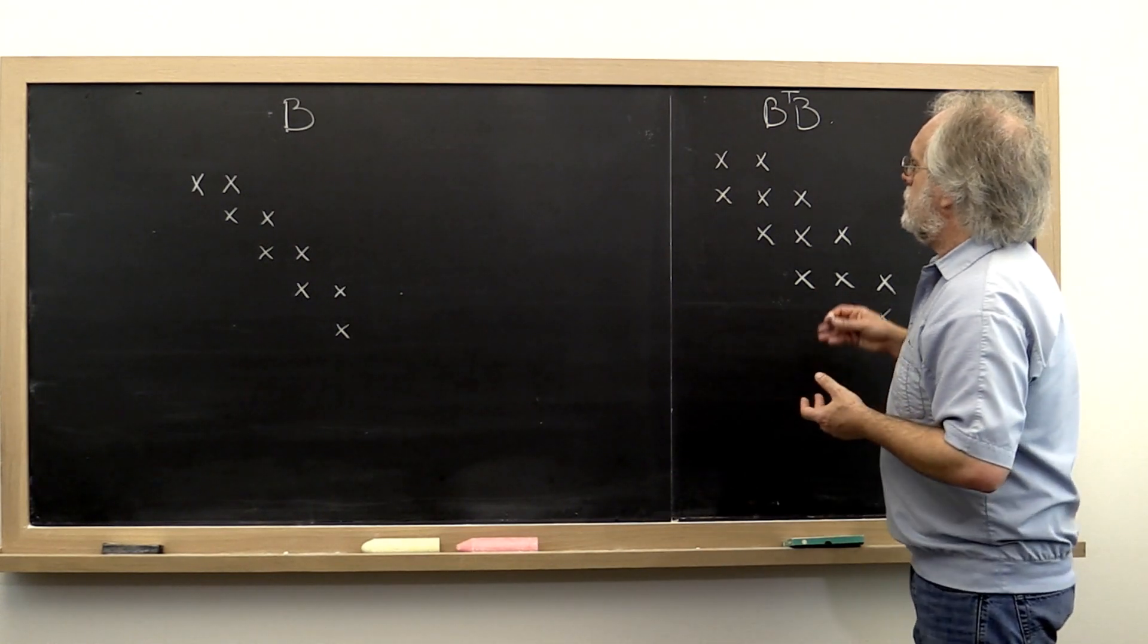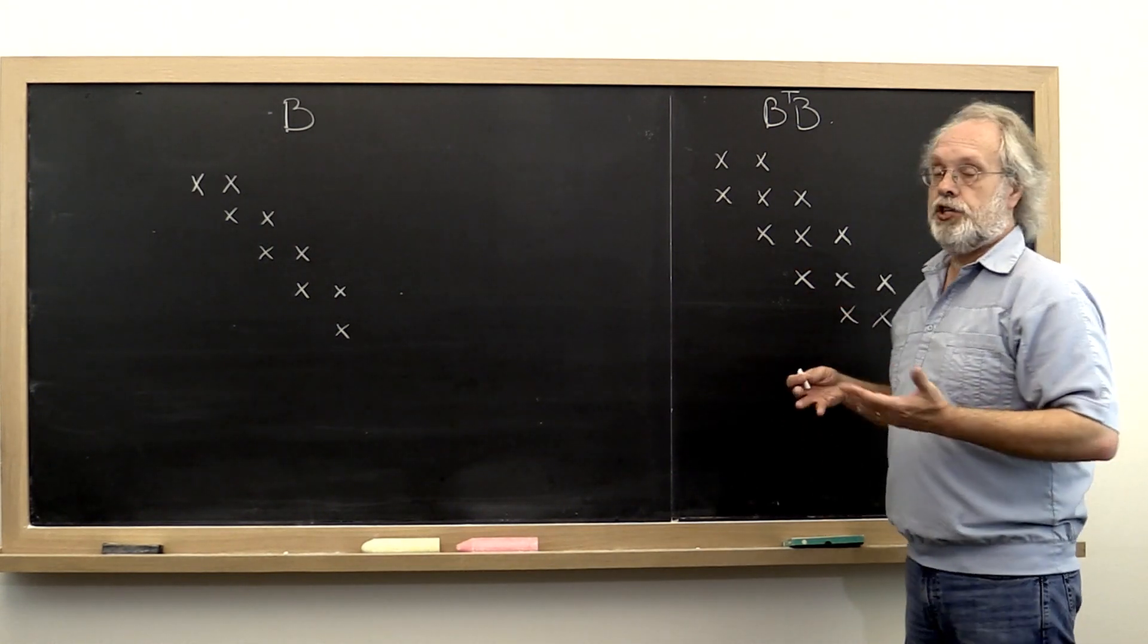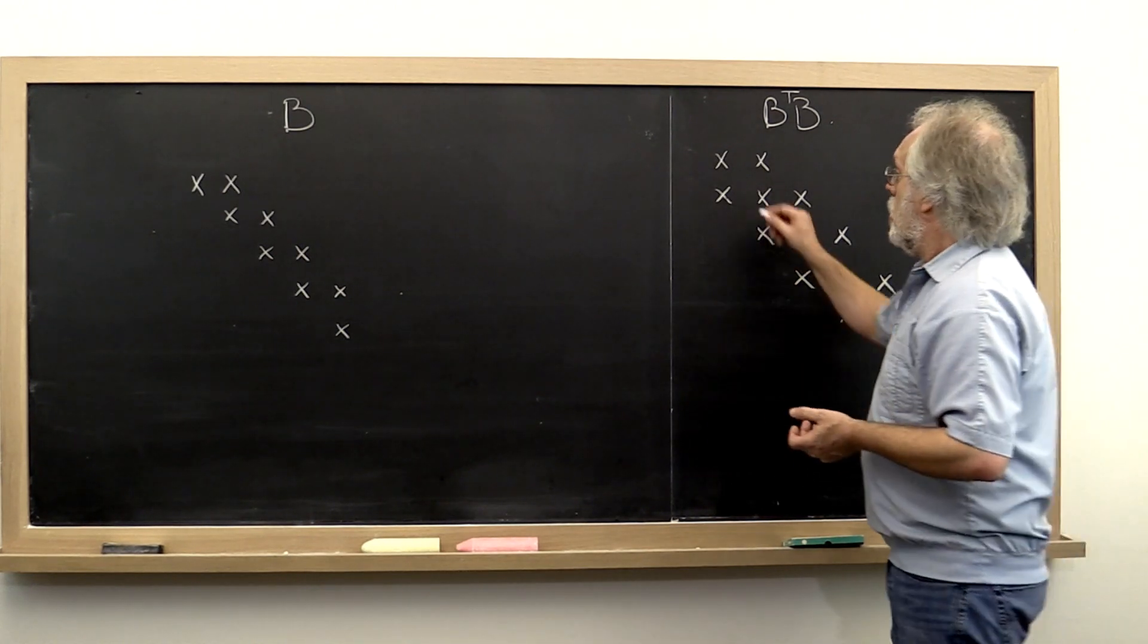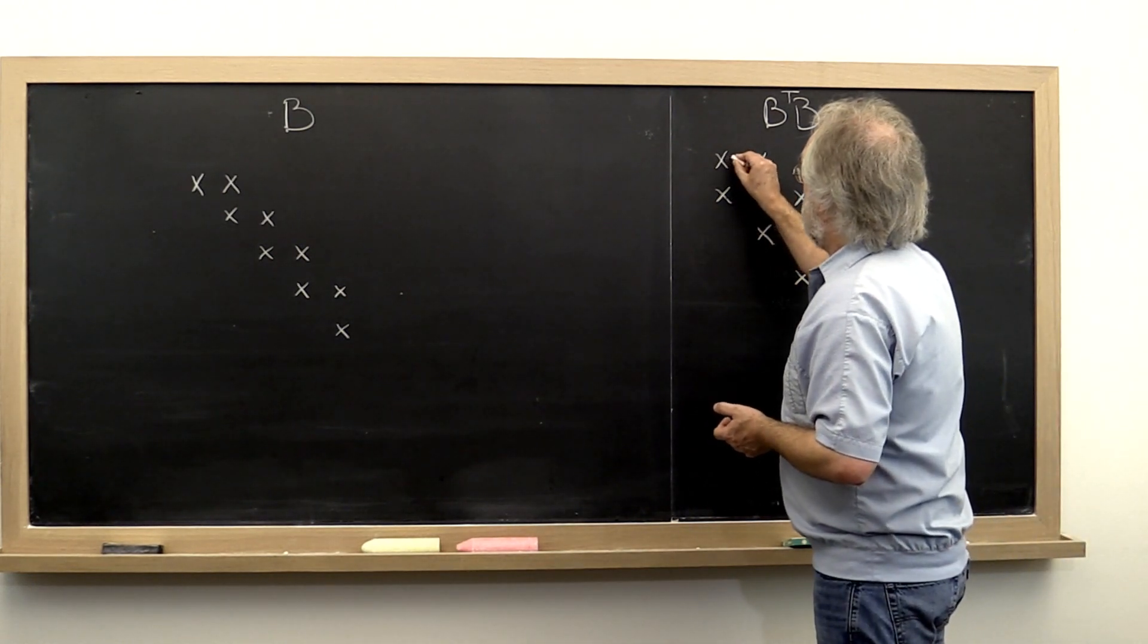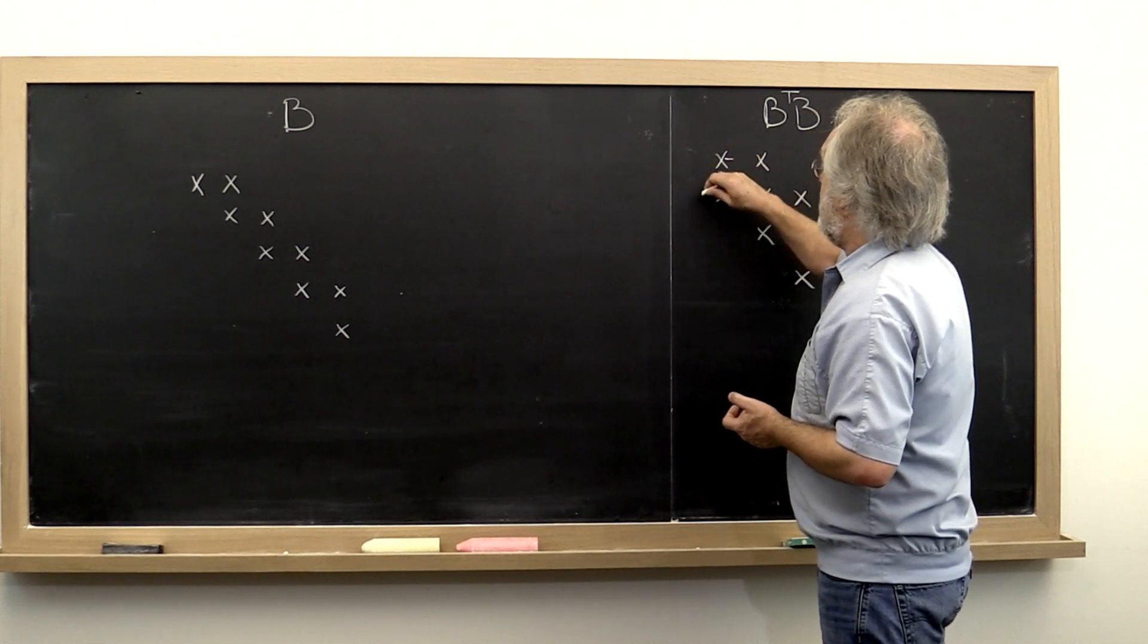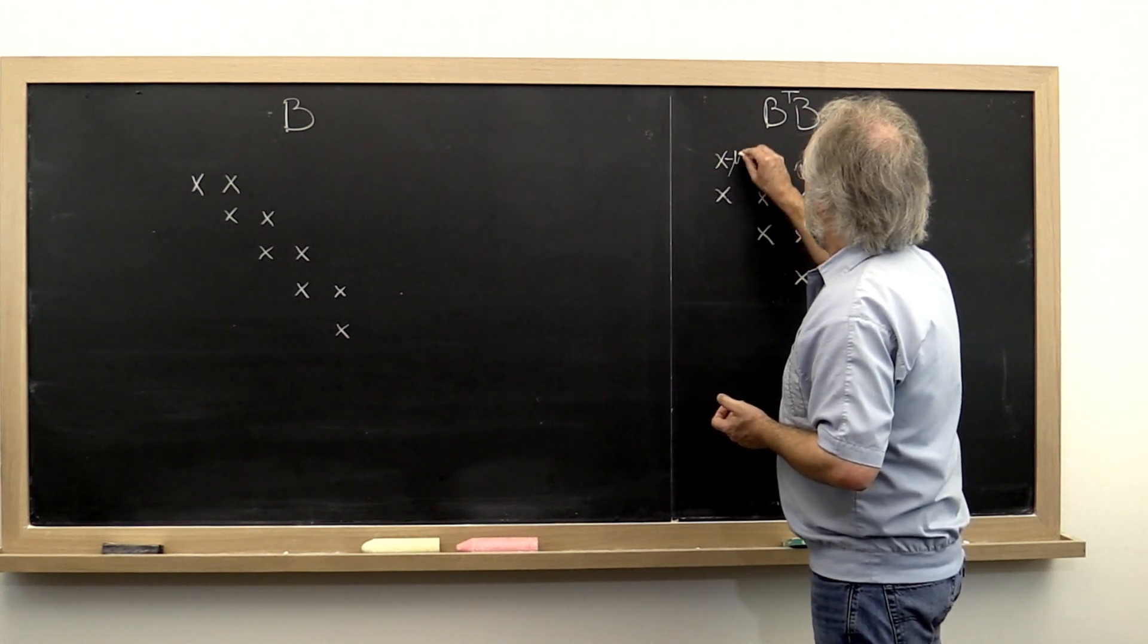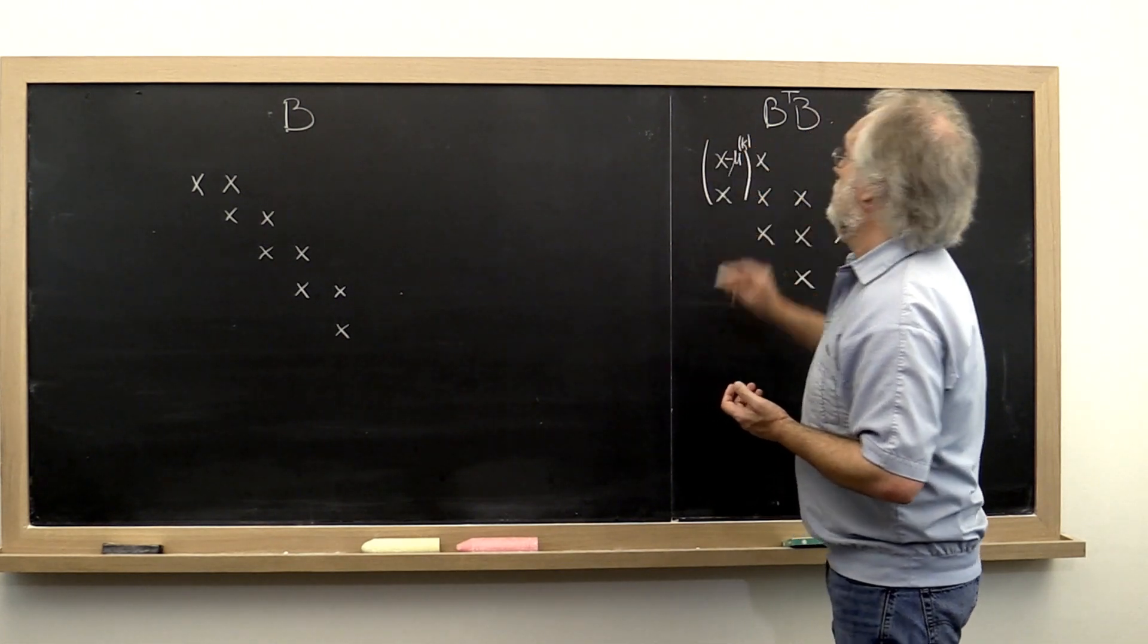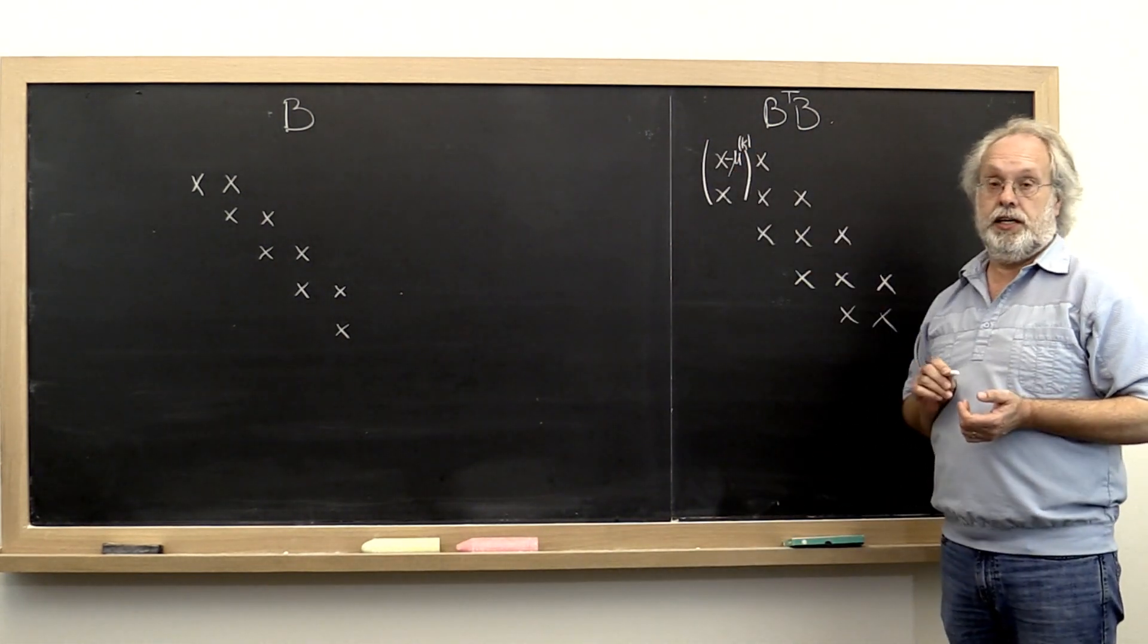Well, notice that to get the implicitly shifted QR algorithm started, all we need to do is shift this element right here by whatever the shift is.